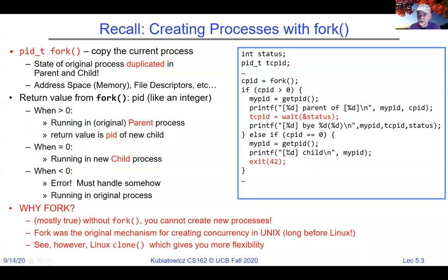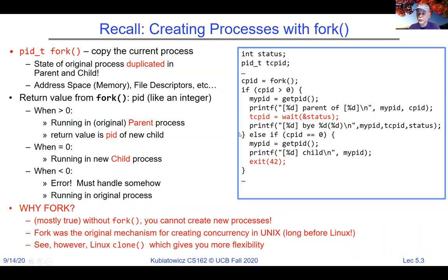There was an interesting question on Piazza: why fork? If it's really creating two identical processes, what's the point? The point is there are two processes where there was one before. Fork is basically how you create new processes. Linux has something called clone which gives you more options than regular fork, but fork was the original mechanism in the first versions of Unix. Its semantics are partially historical, but the question of why fork is really: that's the way you get new processes.